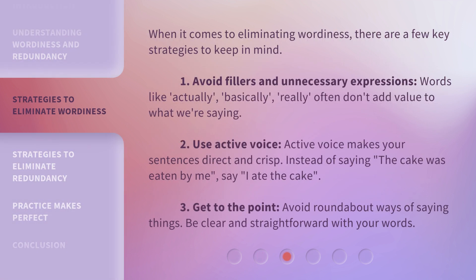When it comes to eliminating wordiness, there are a few key strategies to keep in mind. First, avoid fillers and unnecessary expressions. Words like 'actually,' 'basically,' and 'really' often don't add value to what we're saying. Second, use active voice. Active voice makes your sentences direct and crisp. Instead of saying 'the cake was eaten by me,' say 'I ate the cake.' Third, get to the point. Avoid roundabout ways of saying things. Be clear and straightforward with your words.